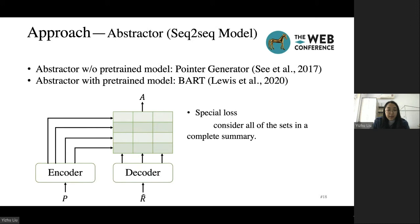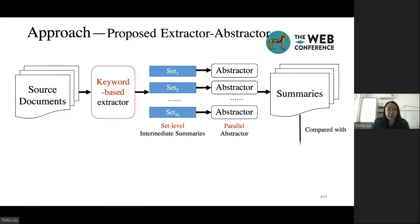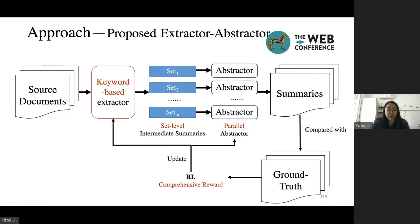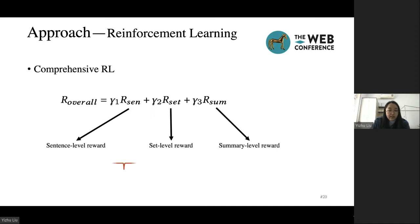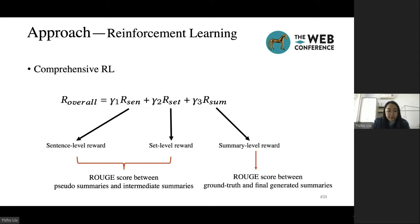In addition, we use a special loss for the parallel abstractor, which considers all of the sets in a complete summary during training. Finally, we use reinforcement learning with a proposed comprehensive reward to bridge our extractor and abstractor. The comprehensive reward is the weighted sum of sentence-level, set-level, and summary-level reward. The sentence-level and set-level reward is the ROUGE score between pseudo-summaries and intermediate summaries. The summary-level reward is the ROUGE score between ground truth and final generated summaries.